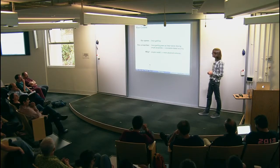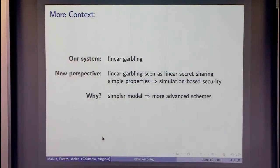The idea is in 400 years, you're going to garble just using linear algebra. Essentially, linear garbling can be compared to linear secret sharing. We show that simple properties imply simulation-based security. In other words, you have simulation proofs without simulation proofs. It's a neat idea. A simpler framework allows you to build more advanced schemes. I'll show you a more advanced scheme later on.